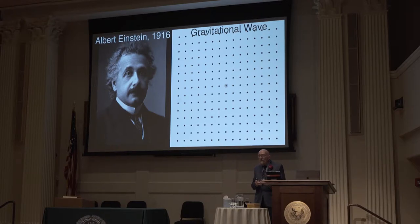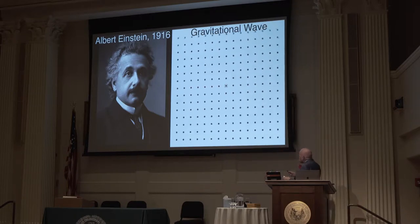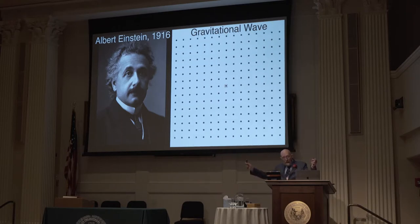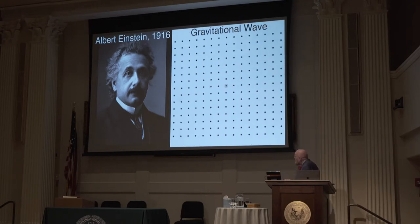Gravitational waves Einstein described in the following way — the idea was there in his 1916 paper. If you were to take out in space, not on the surface of the Earth where you're fighting with gravity, but out in space, take a network of freely falling particles, set all these particles at rest with respect to each other. If there are no gravitational waves, they'll remain at rest. When a gravitational wave comes by, they'll be stretched apart horizontally, squeezed together vertically, and that stretch and squeeze will oscillate, because inertial reference frames that are separated from each other move back and forth. In effect, space is stretched and squeezed in this kind of pattern by the gravitational wave.